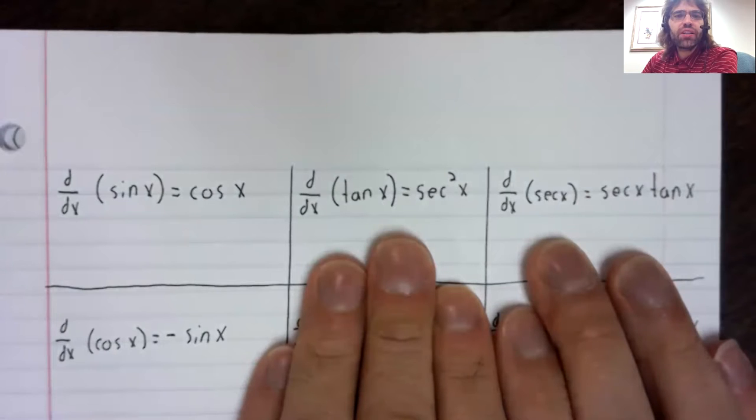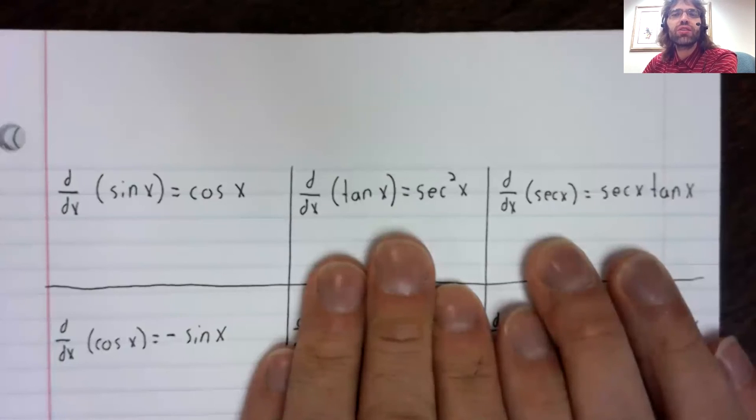So sine, cosine, tangent, and secant form a self-contained set, in the sense that if you start with any of these trig functions and take their derivatives, you end up with the same four trig functions you started with. That's what makes secant important—it inherits its importance from the tangent function.